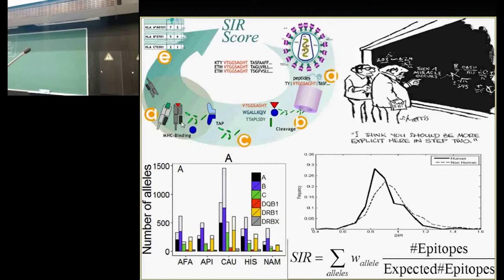Practically every single person in this room has a different class 1 allele combination than anyone else. So if you want to say how many epitopes are presented from a given protein in a given virus, that's very specific to each one of you. But we can take a population — suppose we take the Caucasian population — and ask within this population how many epitopes on average are presented by a given protein in a virus. We get a number, then make the same analysis on the scrambled sequence of the same protein, and define the SIR score as the ratio of these two numbers. This score is population dependent.